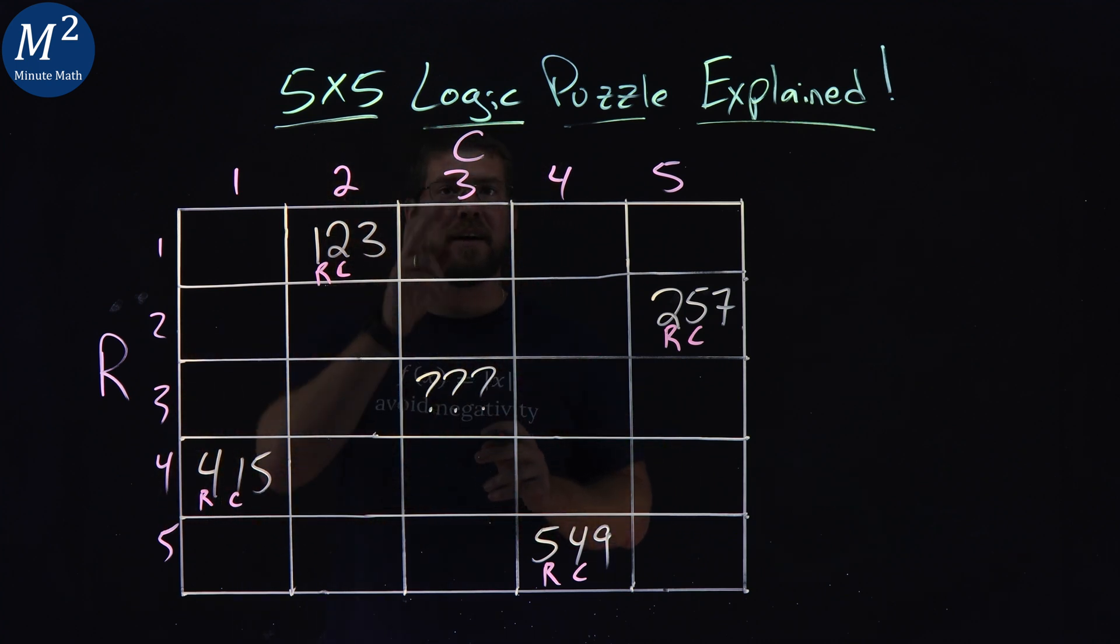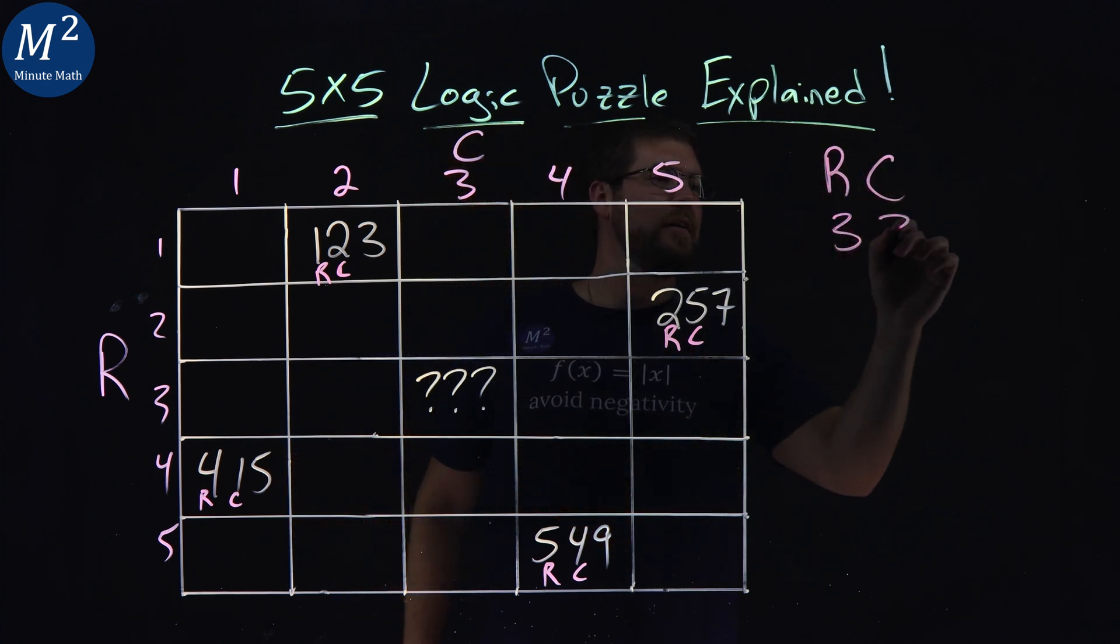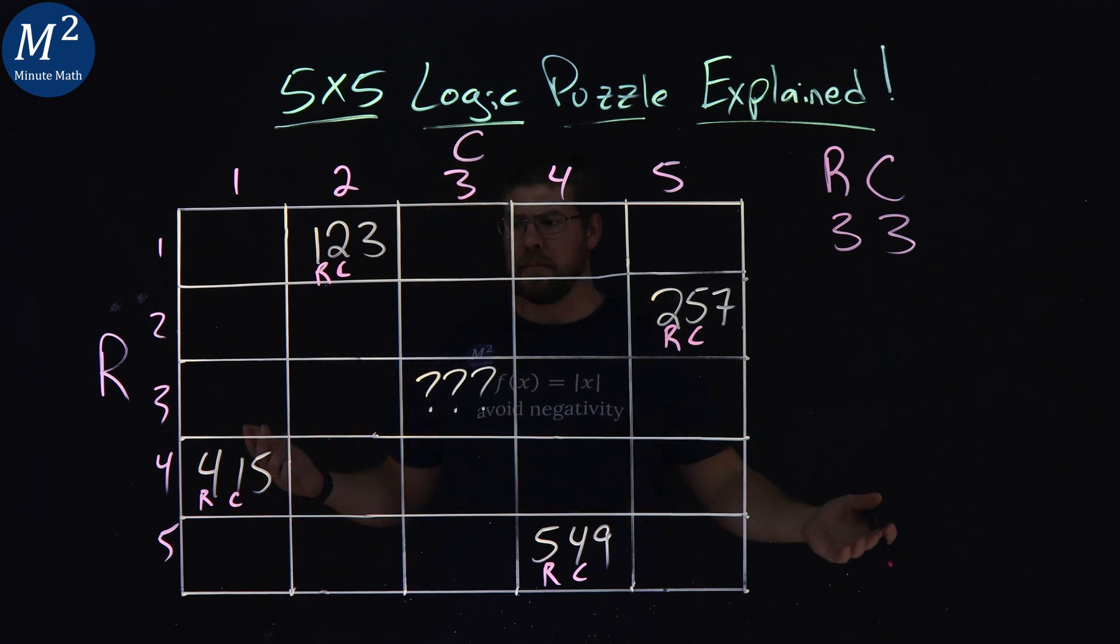Row is 3, column is 3. So we have row, column: 3 and 3. So the first two numbers are 3, 3, got it. What about the last number?